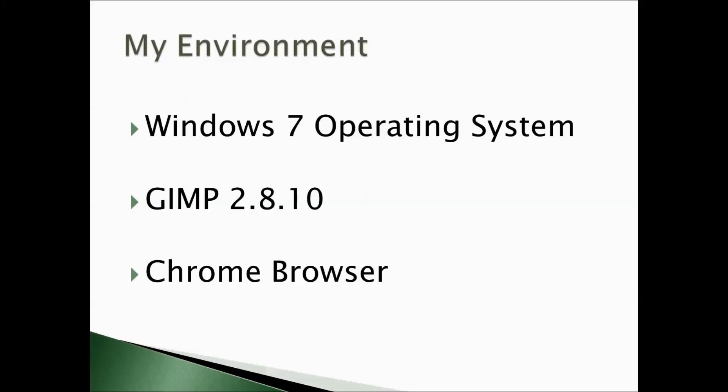The environment I'm going to be running in is on a PC running the Windows 7 operating system. I'll be using GIMP 2.8.10 and the Chrome browser to browse the internet for images and other resources we're going to use in the course. This doesn't mean you can't follow the examples on the GIMP running on Mac OS or on Linux, or that you can't use some other browser. GIMP runs pretty much the same on every operating system and a browser is typically a browser, so your environment should be fine as long as you have a computer, the GIMP, and a browser.